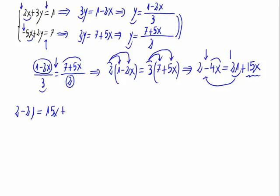2 minus 21 is minus 19 equals 19x, where x would be equal to minus 19 divided by 19. So x is minus 1.